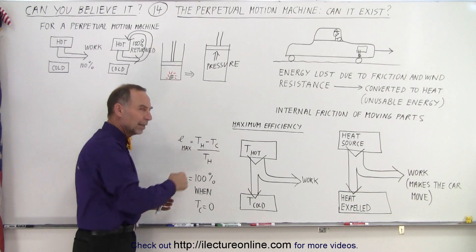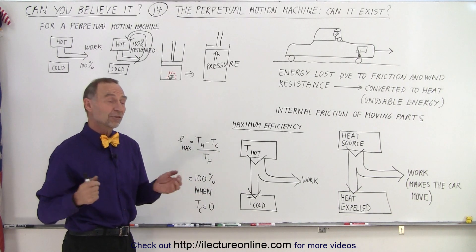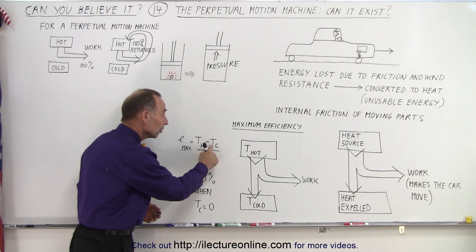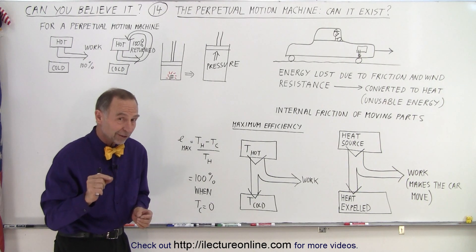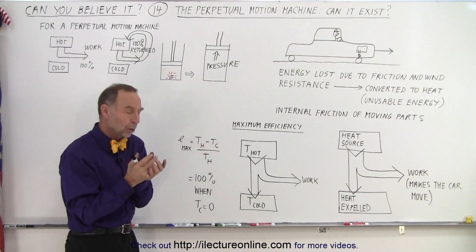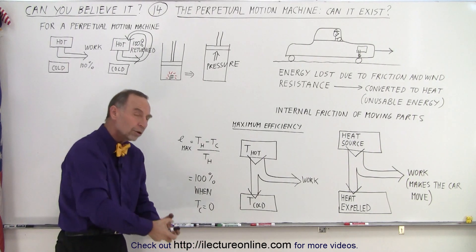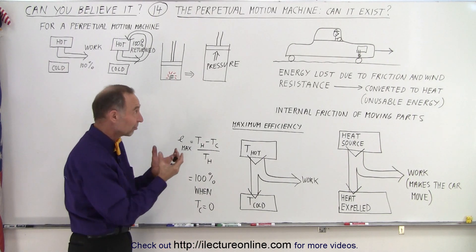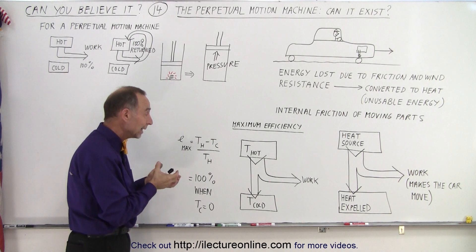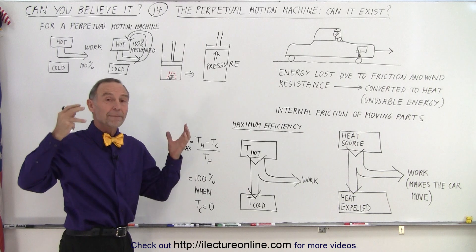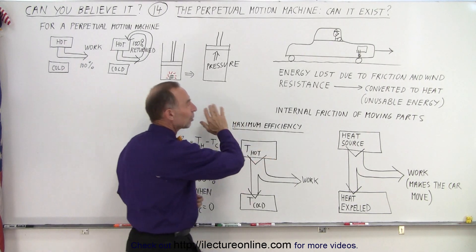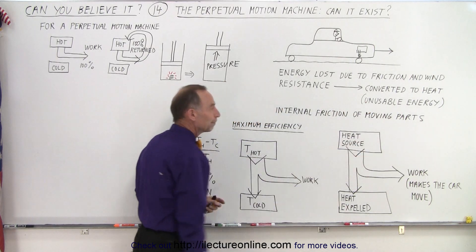How do you make this into 100% efficiency? Well, you do that by making the cold temperature zero. Now, we're not talking about zero degrees Celsius, we're talking about zero degrees Kelvin. If somehow we could pull all of the heat out of the process of the burning of the gas inside the cylinders of the car's engine, we can make the car engine 100% efficient, assuming we can get rid of all the friction and wind resistance.